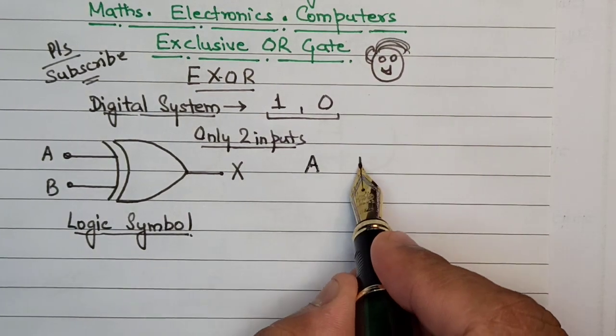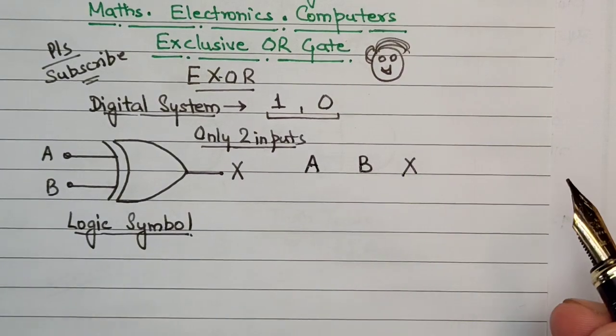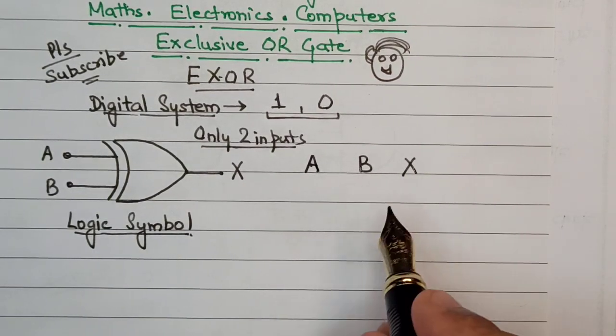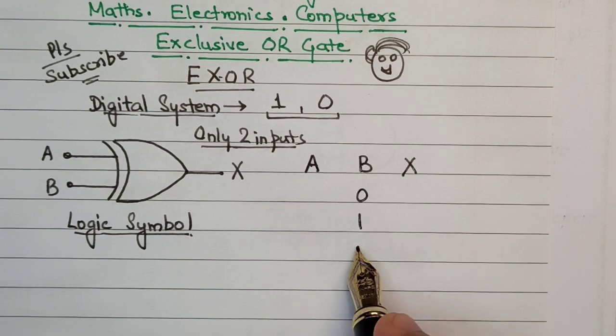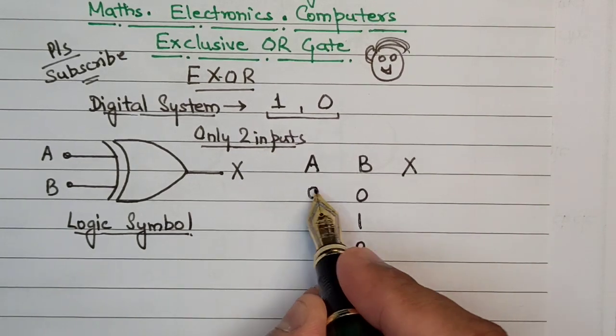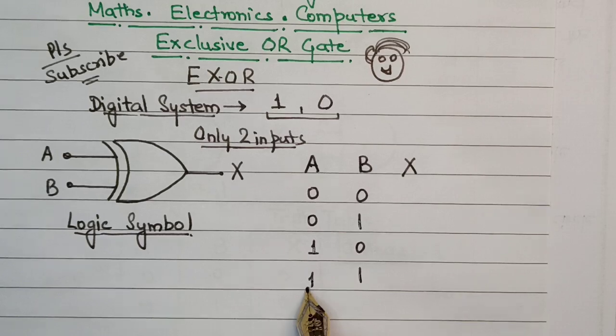For two inputs we have A, B, and X. For the two-input format, we know the sequence: this carries 0, 1, 0, 1 and this one will have 0, 0, 1, and 1.